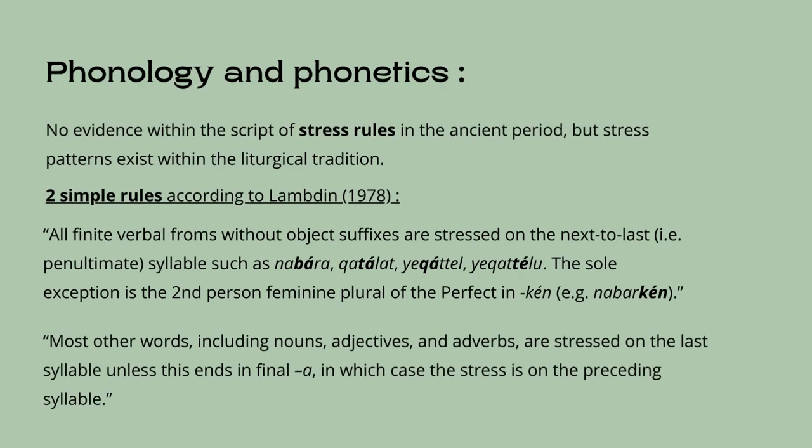There is no evidence within the script of stress rules in the ancient period, but stress patterns exist within the liturgical traditions. According to Lambdin, the vast majority of words may be described by two simple rules: all finite verbal forms without object suffixes are stressed on the next to last syllable — the sole exception being the second person feminine plural of the perfect in -ken — and most other words, including nouns, adjectives, and adverbs, are stressed on the last syllable, unless this ends in the final a, in which case the stress is on the preceding vowel. Words in construct tend to lose their stress or retain only a secondary stress.